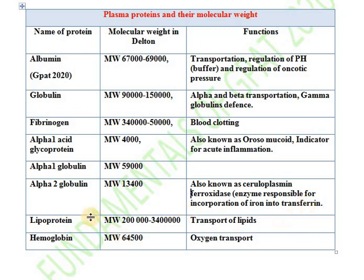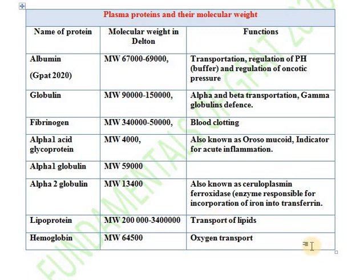Lipoprotein has a molecular weight of around 2 to 3.4 lakhs and is involved in the transportation of lipids. The last plasma protein is hemoglobin, which has a molecular weight of 64,500 daltons and is involved in the transportation of oxygen — it is an oxygen transporter.